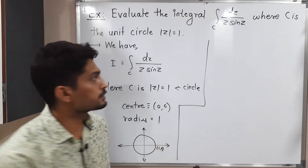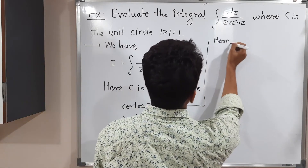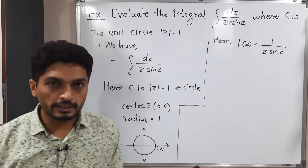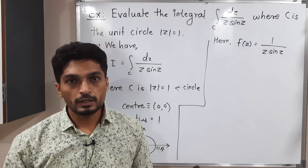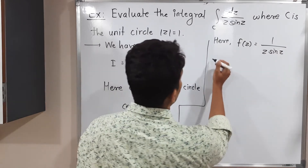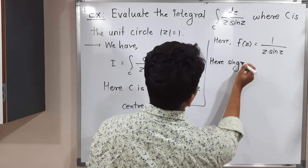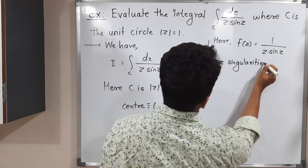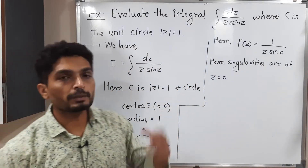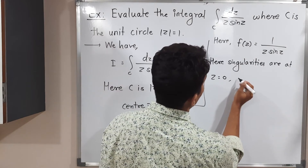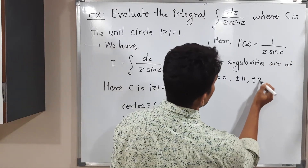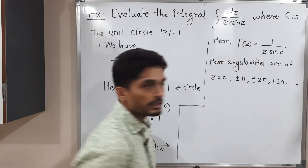Now let us focus on the function. We have F(z) = 1 / (z · sin z). We have to find the singularities — the points where the function is not analytic. The function is not analytic when the denominator is 0. Singularities occur at z = 0, and at z = ±π (since sin π = 0), ±2π, ±3π, and so on. So there are many singularities.